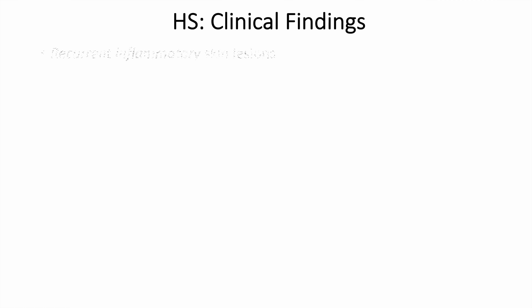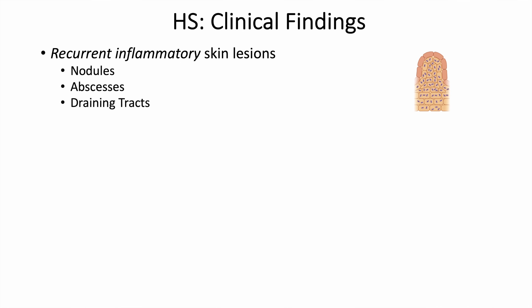These skin lesions are recurrent inflammatory skin lesions — recurrent in that they can develop, go away, and come back again with triggers. The lesions themselves can be anything from nodules, to abscesses filled with pus, to draining tracts where pus and fluid from the lesion can drain through the skin. There can also be scarring from this condition as well.